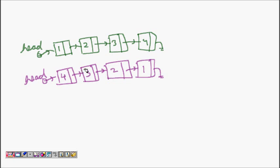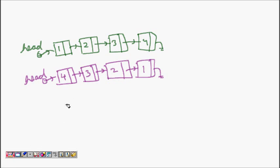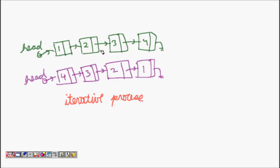There are many approaches. First we will look into the easier one — the iterative process — where we move through the linked list and try to reverse it.